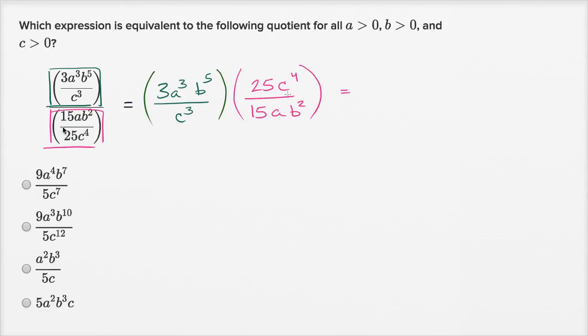And so what's this going to be? Well, let's see, in the numerator you're going to have three times 25 is 75, and then a to the third, b to the fifth, c to the fourth.